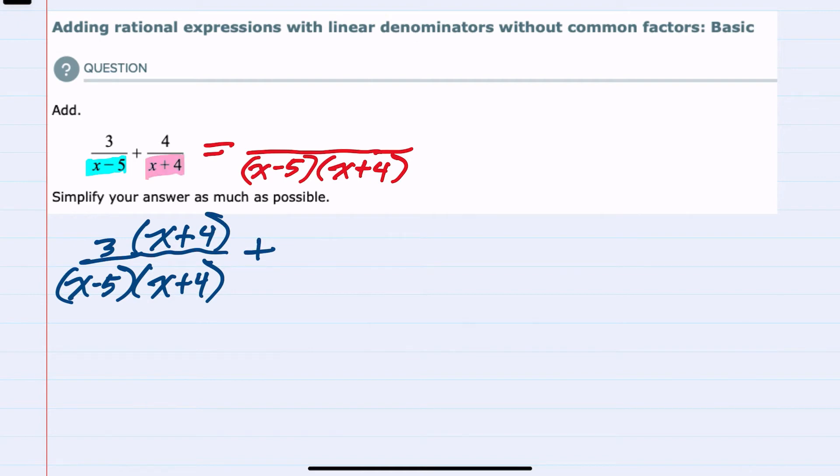it has the x plus 4. So with the 4 and the x plus 4, this denominator will need to be multiplied by x minus 5. And to do so, I would need to do the same in the top, multiply by x minus 5. That would allow me to add the two fractions and have the x minus 5, x plus 4, our common denominator.